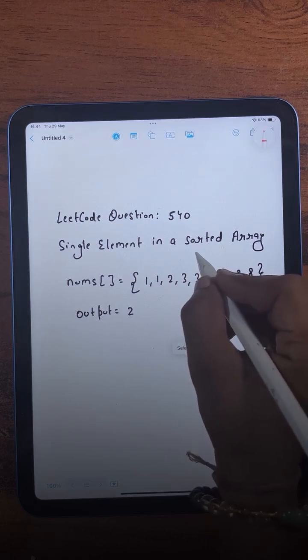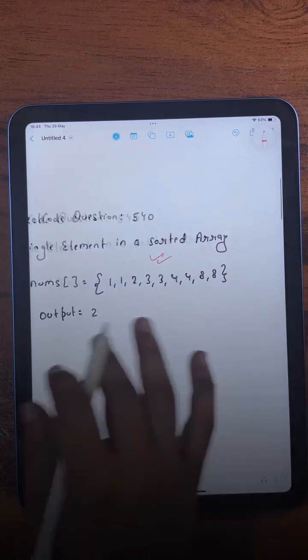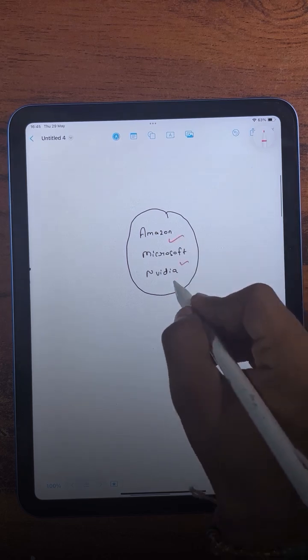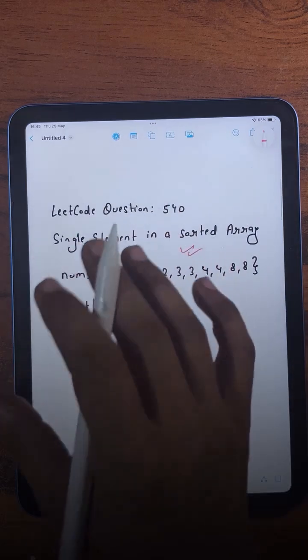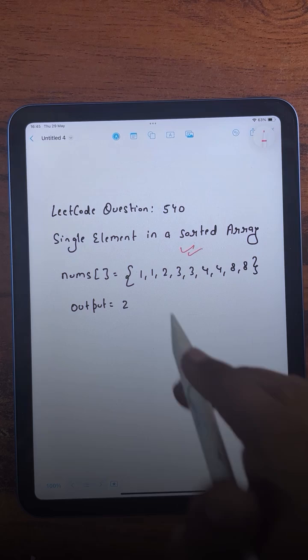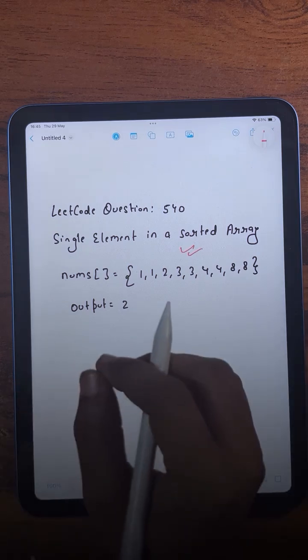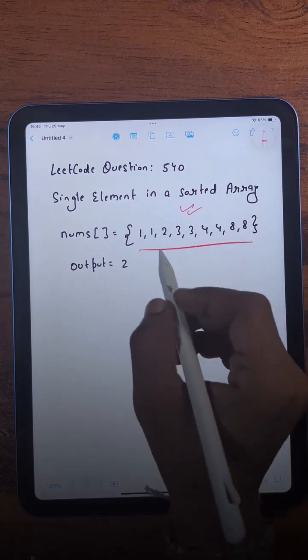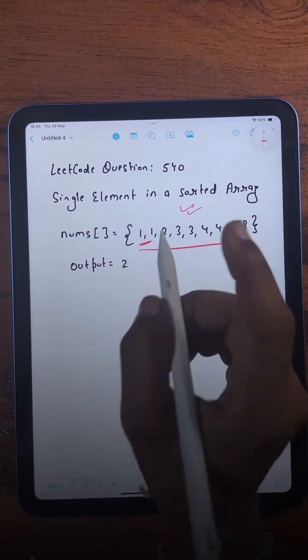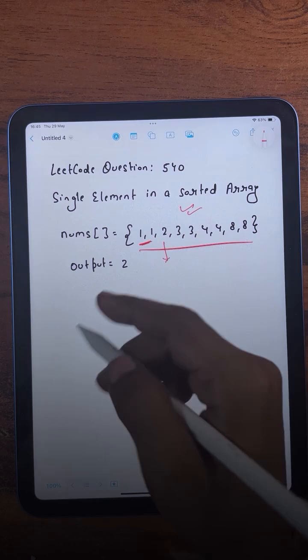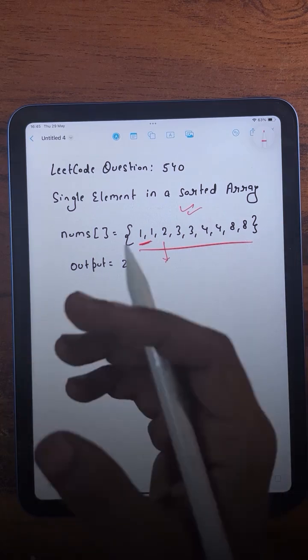Today we have this LeetCode medium level question: single element in a sorted array. This question has been asked at Amazon, Microsoft, and NVIDIA. For this particular question, we will be learning four different approaches, so make sure to watch till the end because the last approach is definitely going to blow your mind. The question says we are given a sorted array in which every element appears twice except one element that appears only once, and our task is to find that element.